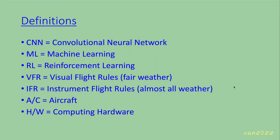First, some definitions. CNN stands for Convolutional Neural Network. ML stands for Machine Learning. RL stands for Reinforcement Learning. VFR stands for Visual Flight Rules, the fair weather kinds of flying. IFR stands for Instrument Flight Rules, which is almost all weather kinds of flying. AC stands for Aircraft, and HW stands for Computing Hardware.